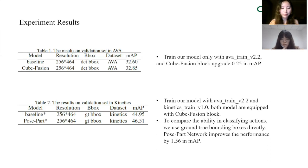In our experiments comparing our model with baseline on the AVA dataset, training only with AVA training data, the fusion block upgrades 0.25% in MAP. Training with both AVA and Kinetics datasets, using ground-truth bounding boxes directly, the pose-part network improves performance by 1.56% in MAP.